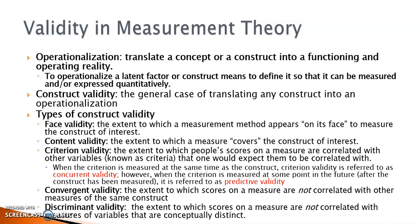The next type of validity is criterion validity. Criterion validity measures the extent to which people's scores on a measure are correlated with other variables that one would expect them to be correlated with. The other variables used are known as criterion. When the criterion is measured at the same time as the construct, criterion validity is referred to as concurrent validity. For example, a group of high school students took SAT for college application.